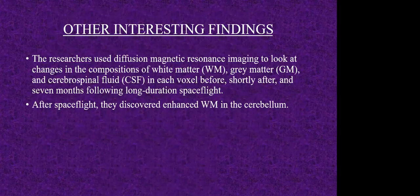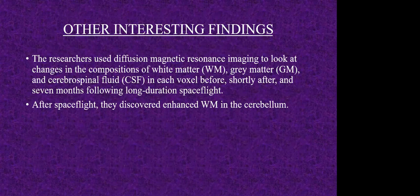Some other interesting findings: some scientists were interested in white matter and gray matter changes. White matter and gray matter are basically the assistants of the entire brain. The gray matter is located near the outer portions of the brain and controls the processing of the entire brain. The white matter is located in the deep portions of the brain and assists the gray matter by controlling communication between different areas of gray matter within the central nervous system. After longer-duration space flights, it was found that the white matter had enhanced in the cerebellum.